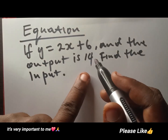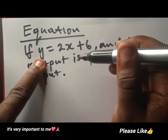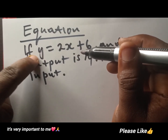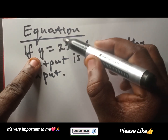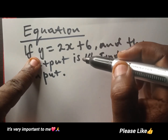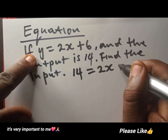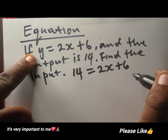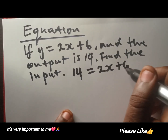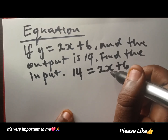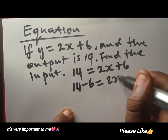Remember, the input is inside — it's x, as you can see. The output is the one that is outside alone. That is your answer. Always the input is inside, mixed with numbers — that's a clue. So 14 is equal to 2x plus 6. From here, you know how to play this game. We need this 6 to go to that side because we need x to be alone. So it's going to be 14 minus 6 equal to 2x.